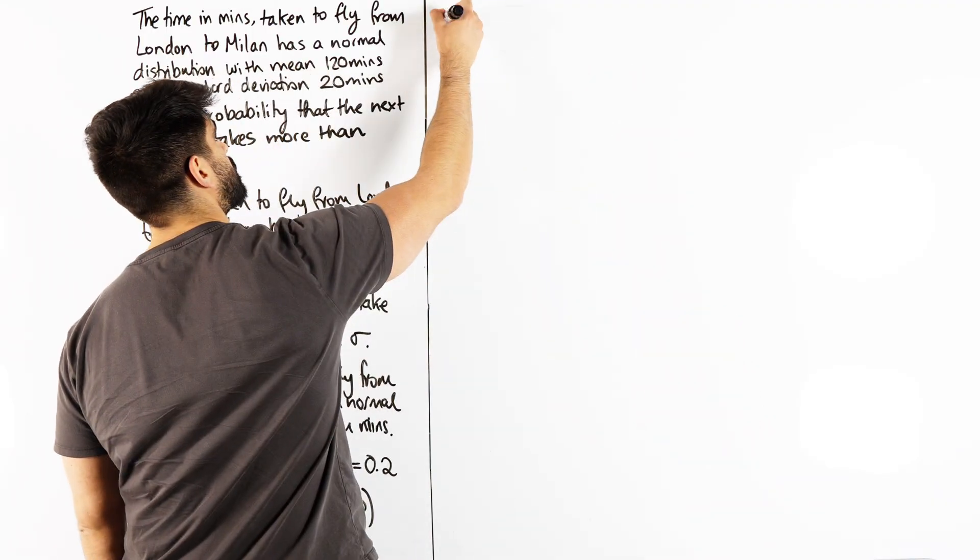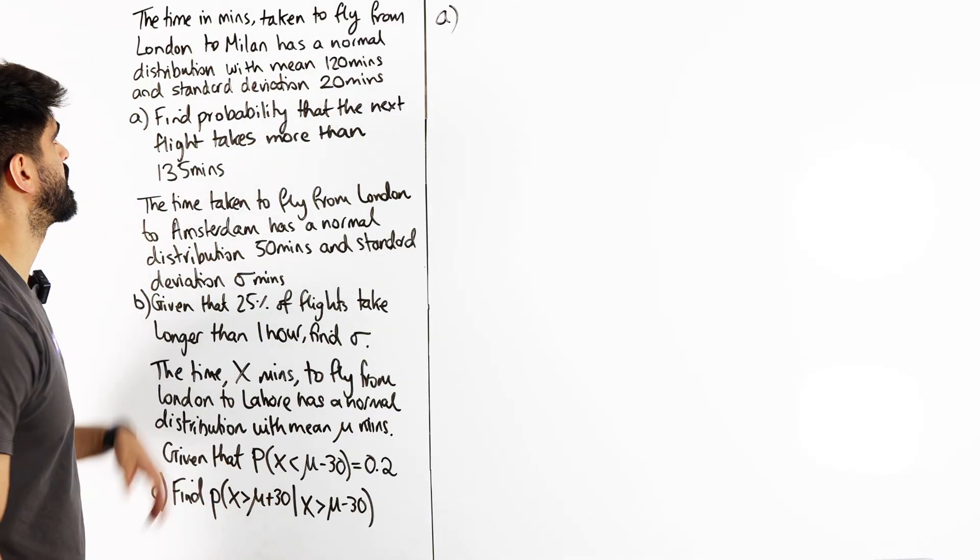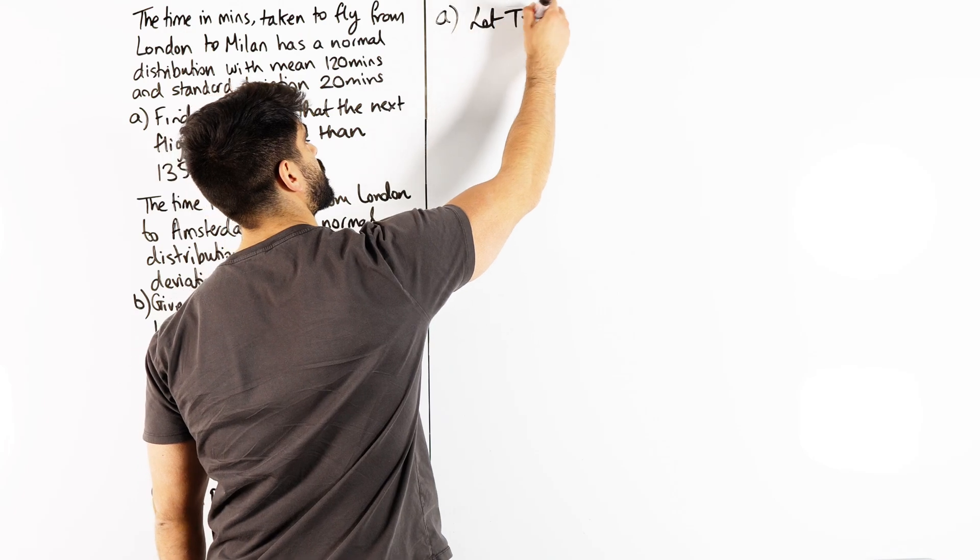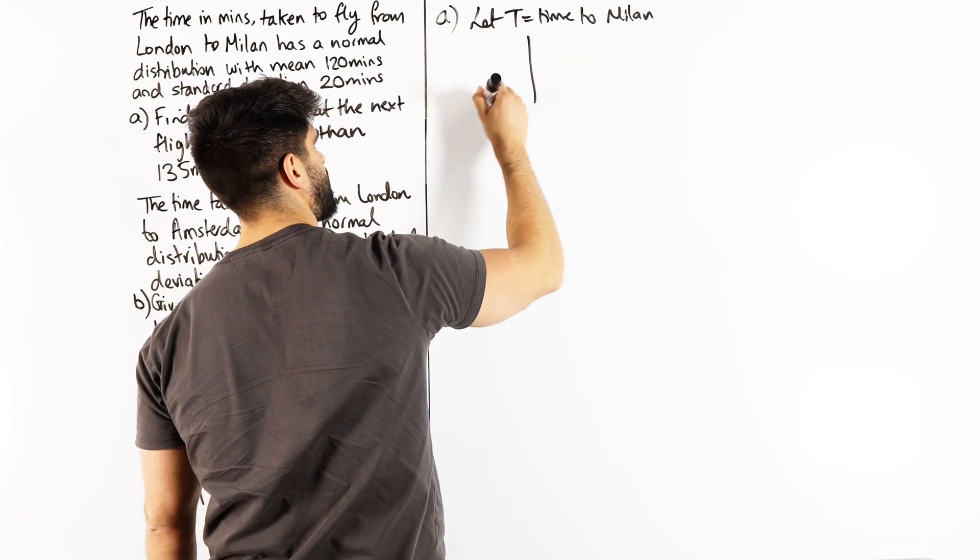It says the time in minutes taken to fly from London to Milan has a normal distribution with mean 120 minutes, standard deviation 20 minutes. Find the probability that the next flight takes more than 135 minutes. Okay, so let's define our distribution. They're talking about x over here, so let's say t. So let's set t equal time to Milan.